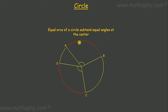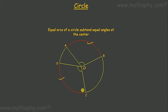This means in a circle, if we have more than one arc — suppose in this circle we have two arcs, arc AB and arc DC — if the length of arc AB and arc DC is the same, then the angles made by these arcs, angle AOB and angle DOC, will also be the same.